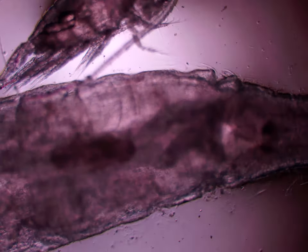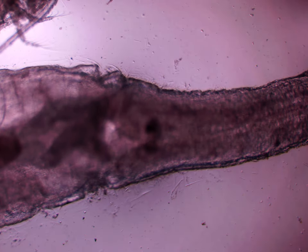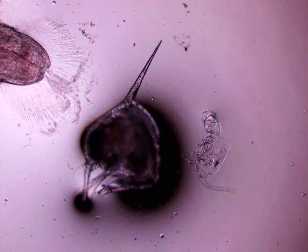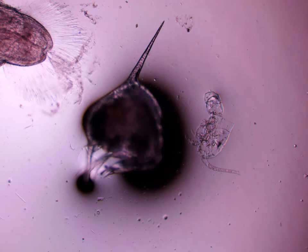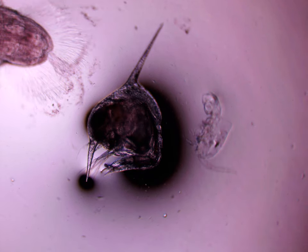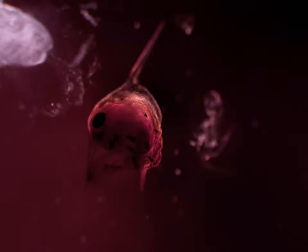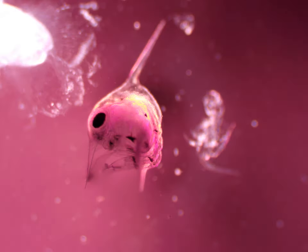Zooming out, you can see this is a zoea, which is basically a crab larvae. They have this odd exoskeleton that looks kind of spiny, almost like it has two spines.